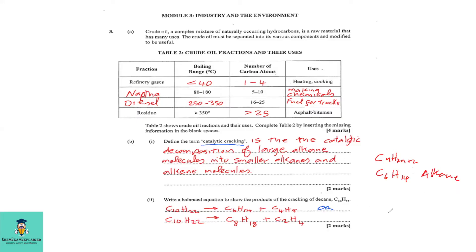The 4-carbon fragment is the alkene produced: C₄H₈ (using CₙH₂ₙ). Alternatively, you could get C₈H₁₈ as the alkane and C₂H₄ as the alkene. Remember, this is an industrial way to produce alkenes when you break up larger carbon chains.